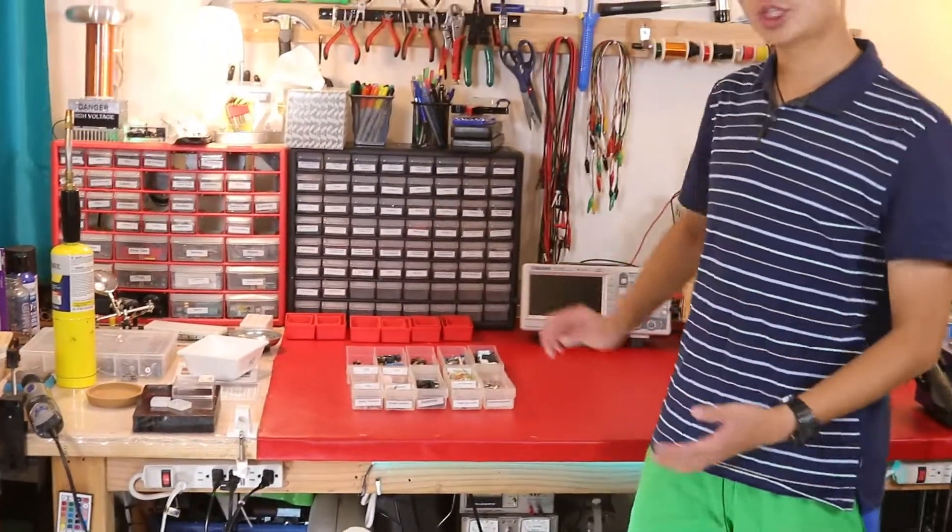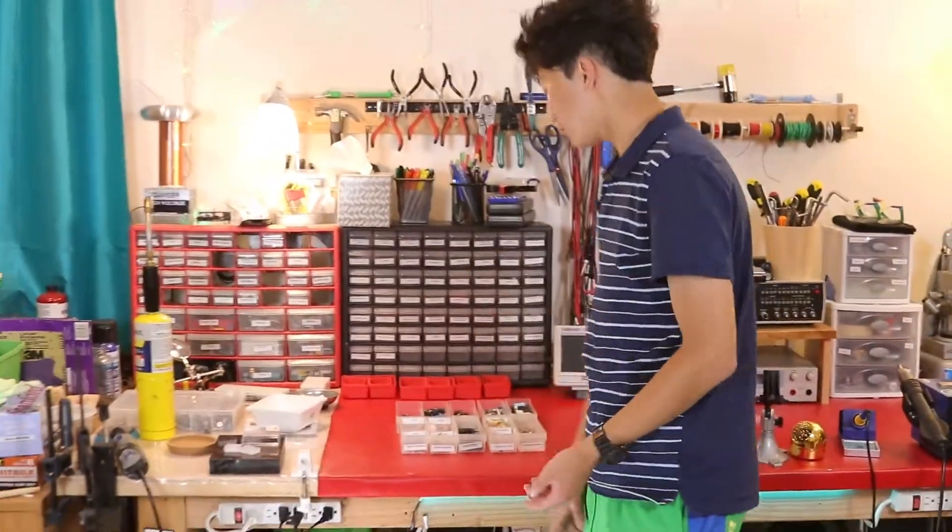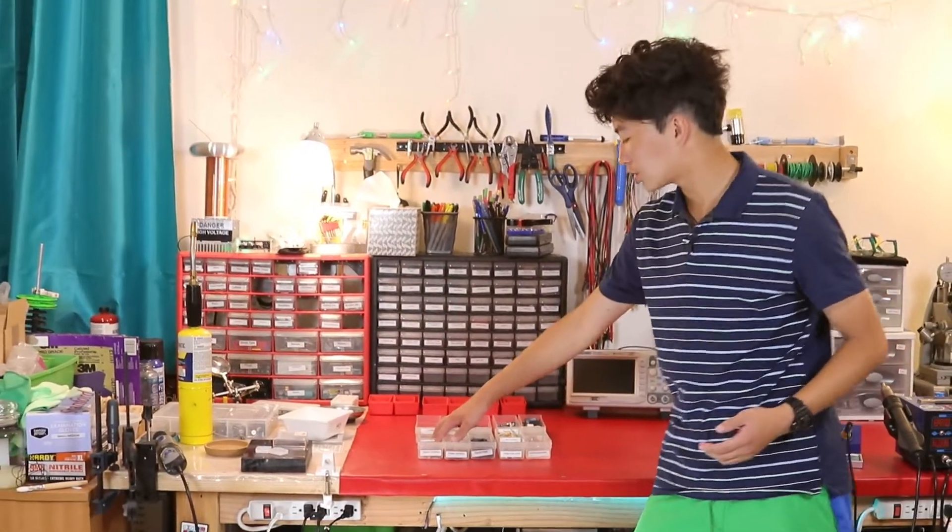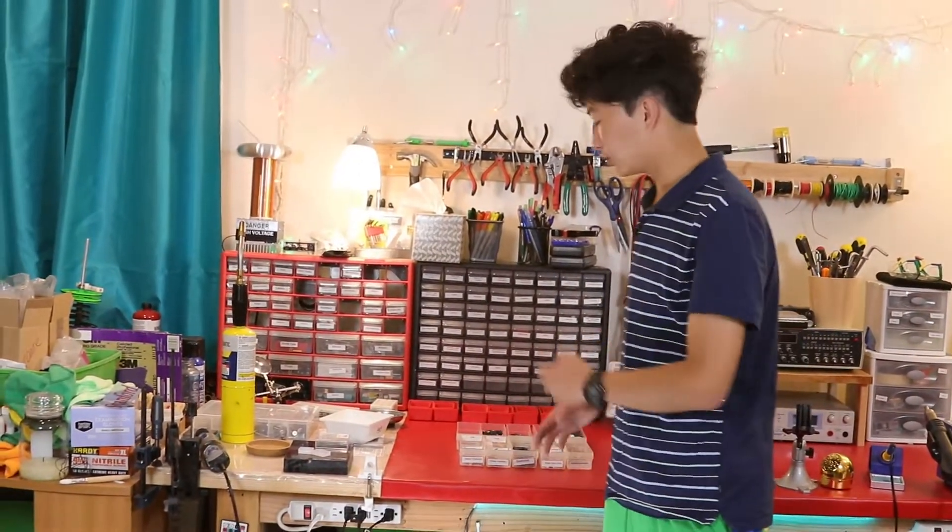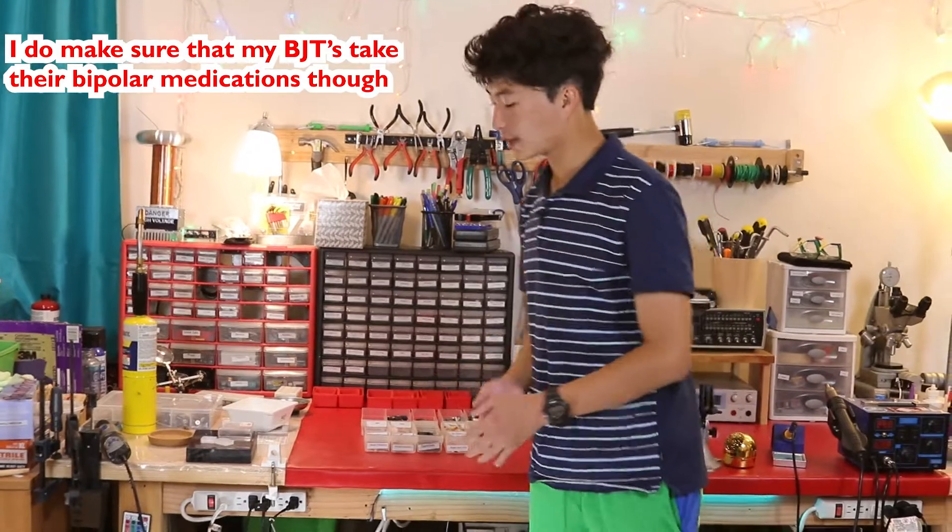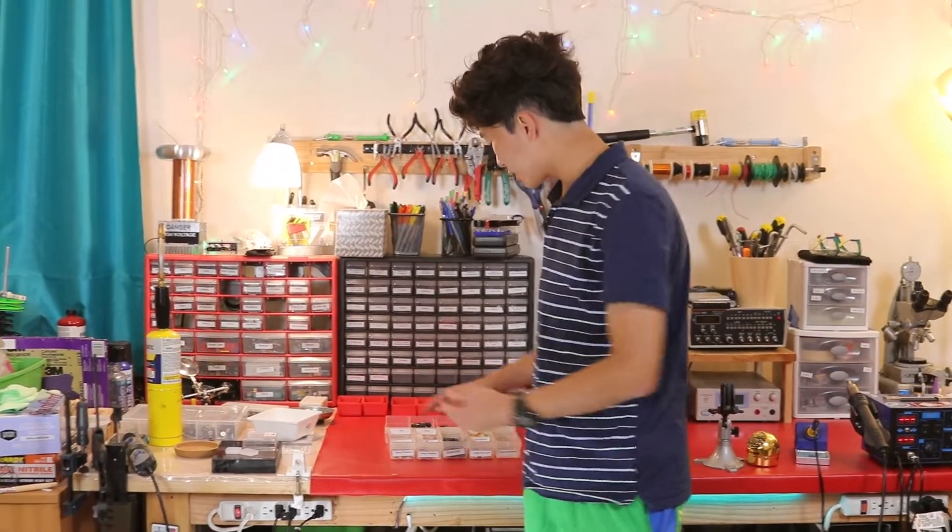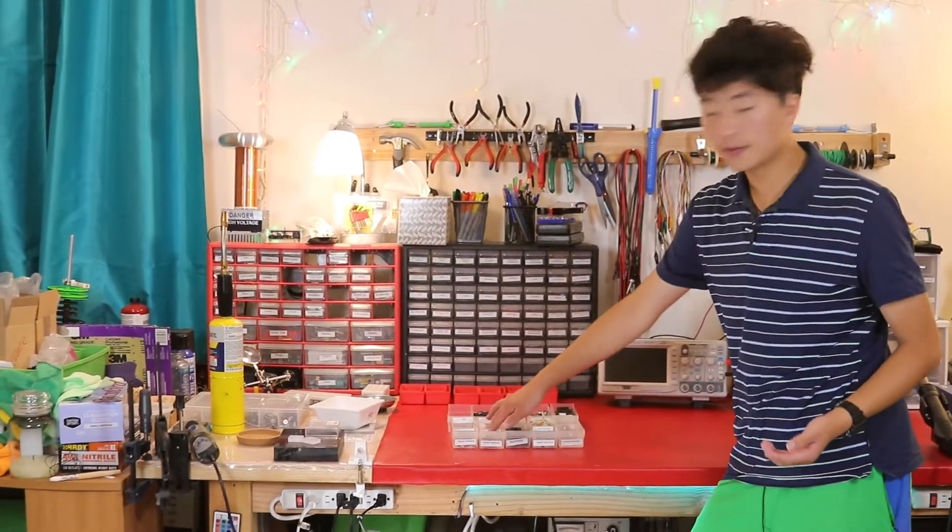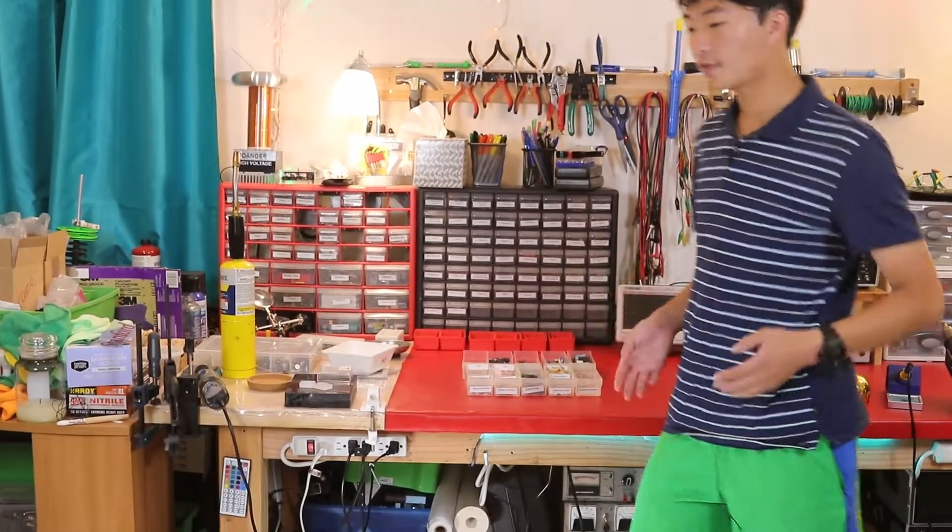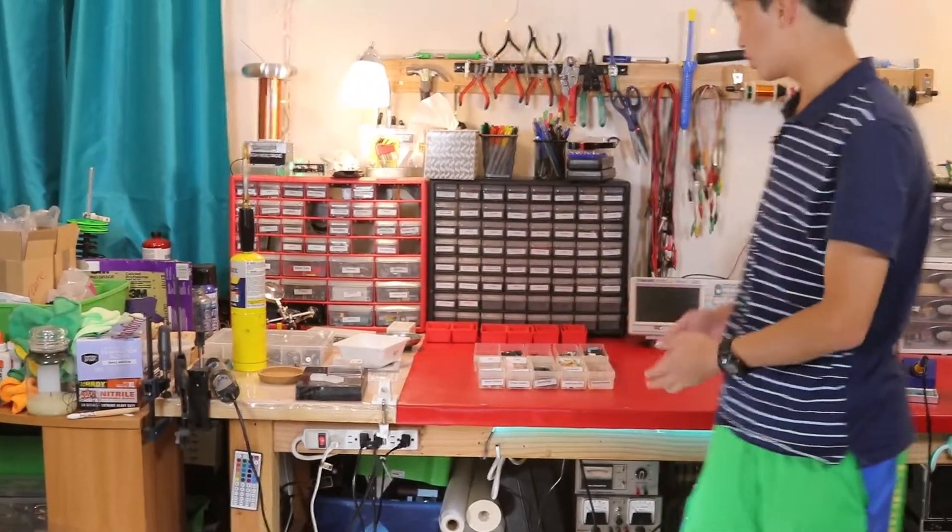These are relays. They control high-current, high-voltage applications using low-voltage signals. Similar idea with these transistors—they're bipolar, not the mental disorder, but sort of a meaning of the NP junction. And so these control voltages. These are voltage regulators. They're good when you have a bad voltage you want to convert into a more stable voltage.